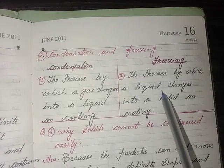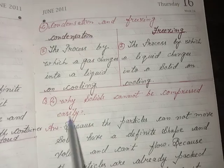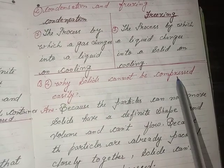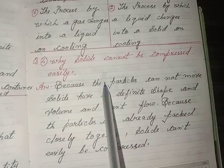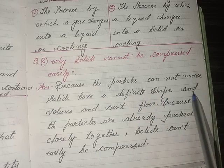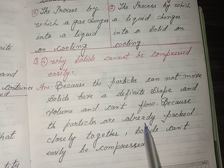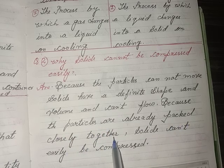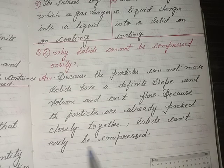Differentiate between condensation and freezing. Condensation: the process by which a gas changes into a liquid on cooling. Freezing: the process by which a liquid changes into a solid on cooling. Why can solids not be compressed easily? Because the particles are already packed closely together, so solids can't easily be compressed.